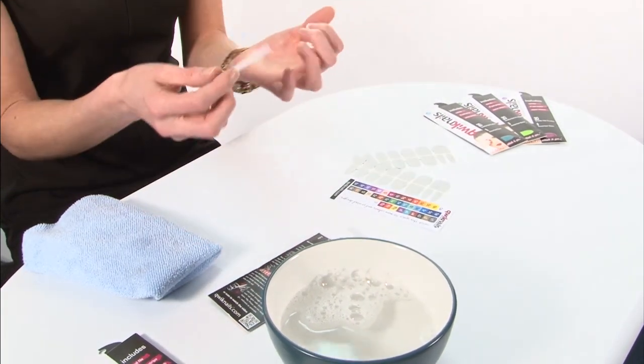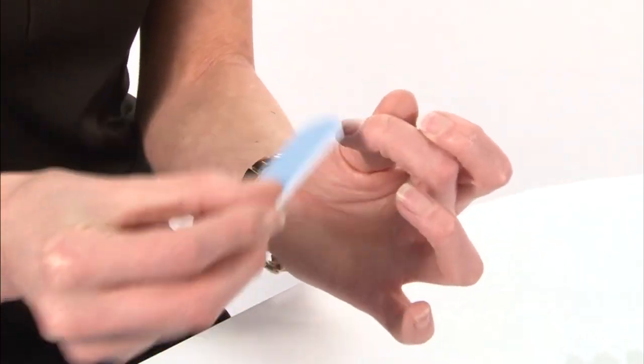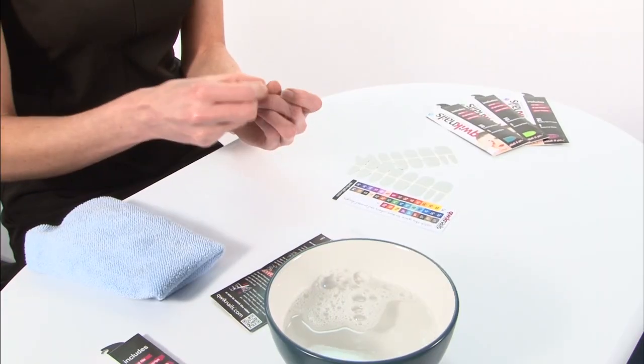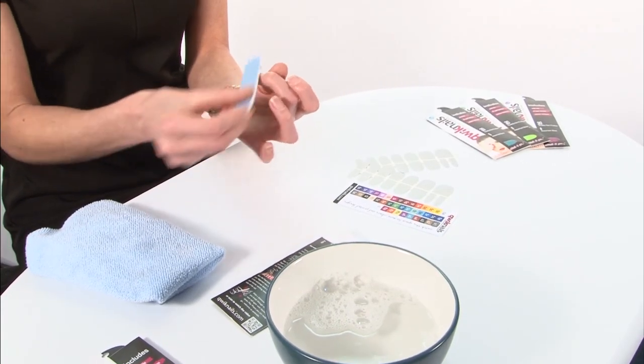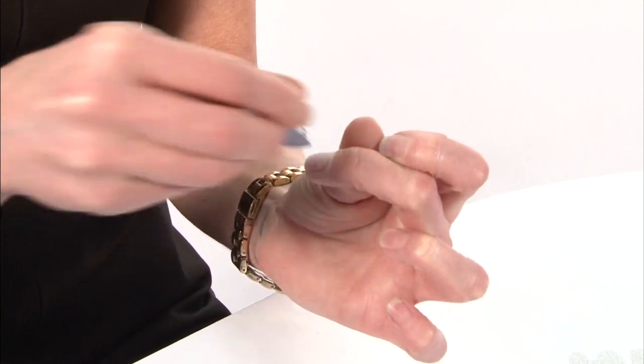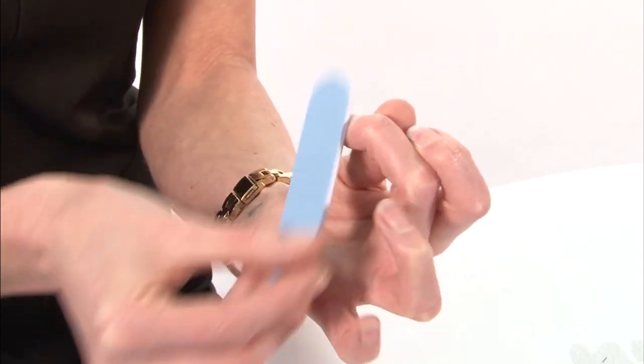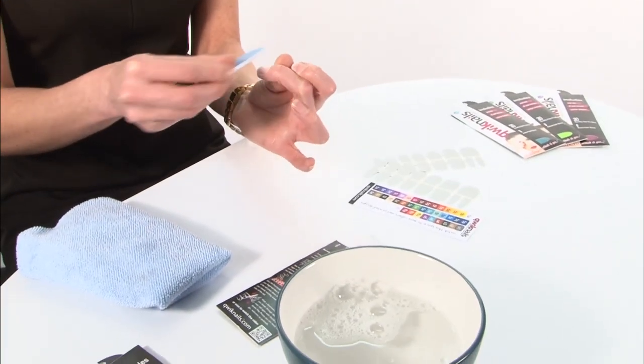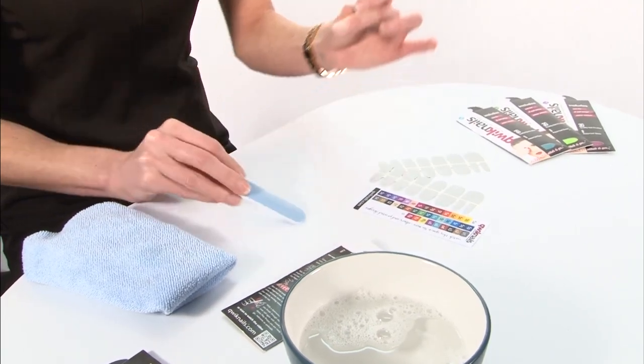To begin with, lightly buff the nail to remove any ridges or bumps on the nail plate. Make sure you use the lighter side of the buffer to buff the natural nail and the coarser side to remove the excess wrap from the free edge.